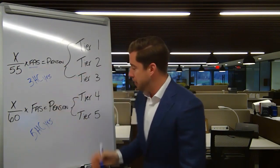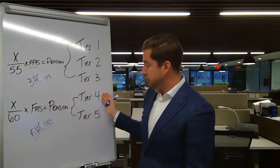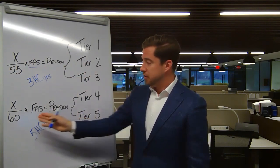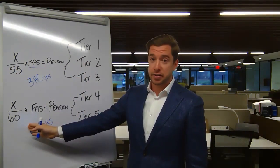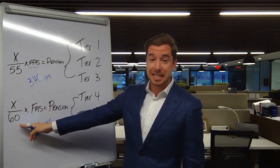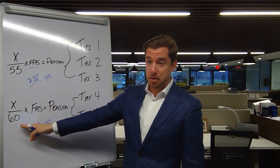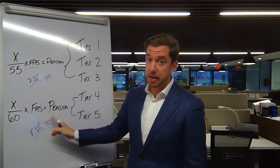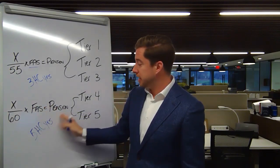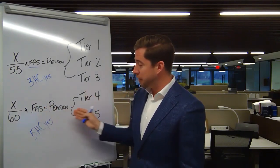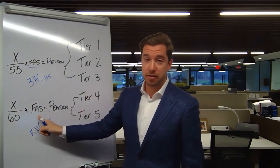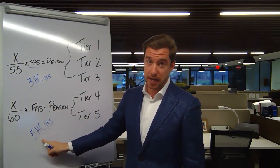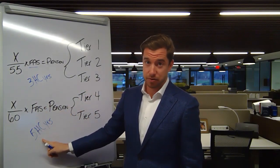Now, for tiers 4 and 5, the formula has changed. Number of years of service, over 60, multiplied by your final average salary, equals your pension. In tiers 4 and 5, your final average salary is your five highest paying consecutive years.